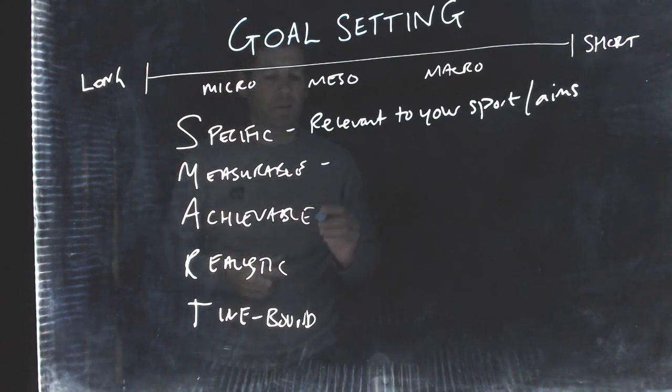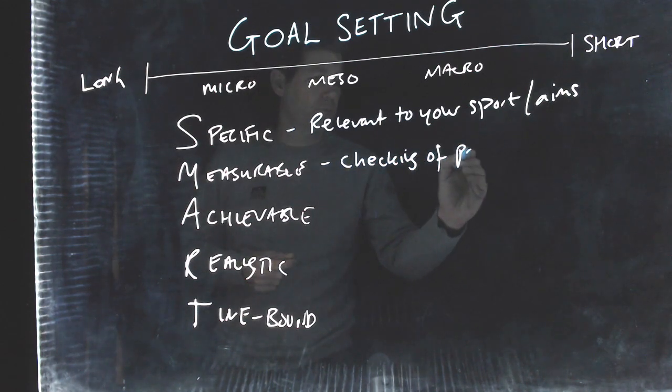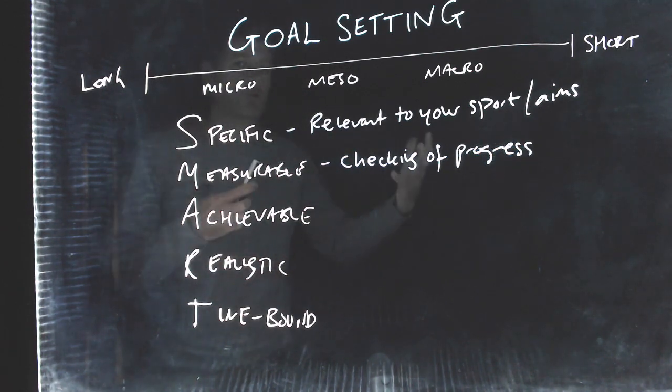Measurable is how you measure that. So how do you account for it? How do you check on it? So it's that checking of progress. So in athletics, it might be that you're getting faster or you're throwing an object further. So you have a measurable outcome, like a variable that you can test and say, yeah, I'm making improvements bit by bit because I'm throwing the object further or I'm running or I'm swimming faster.